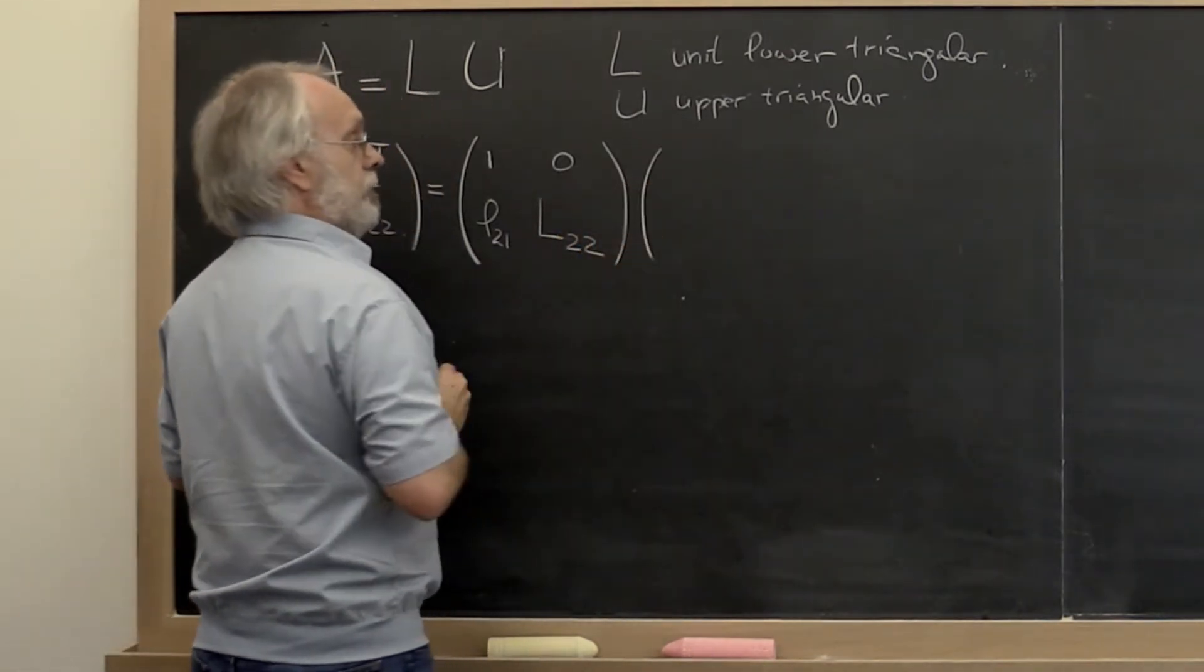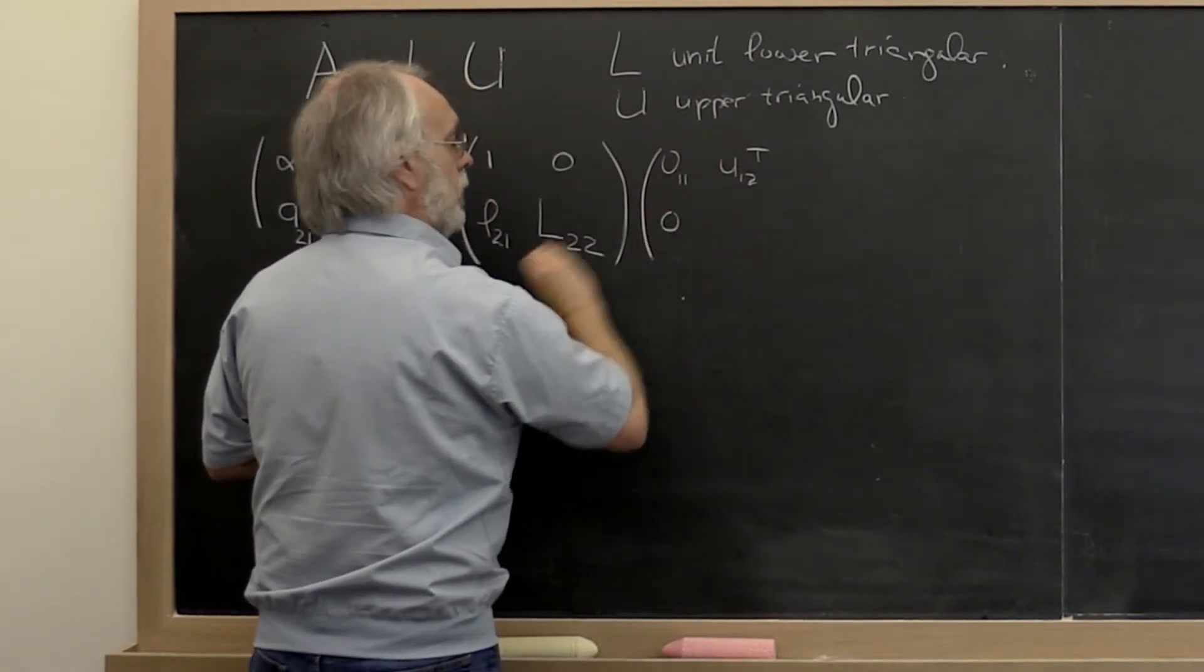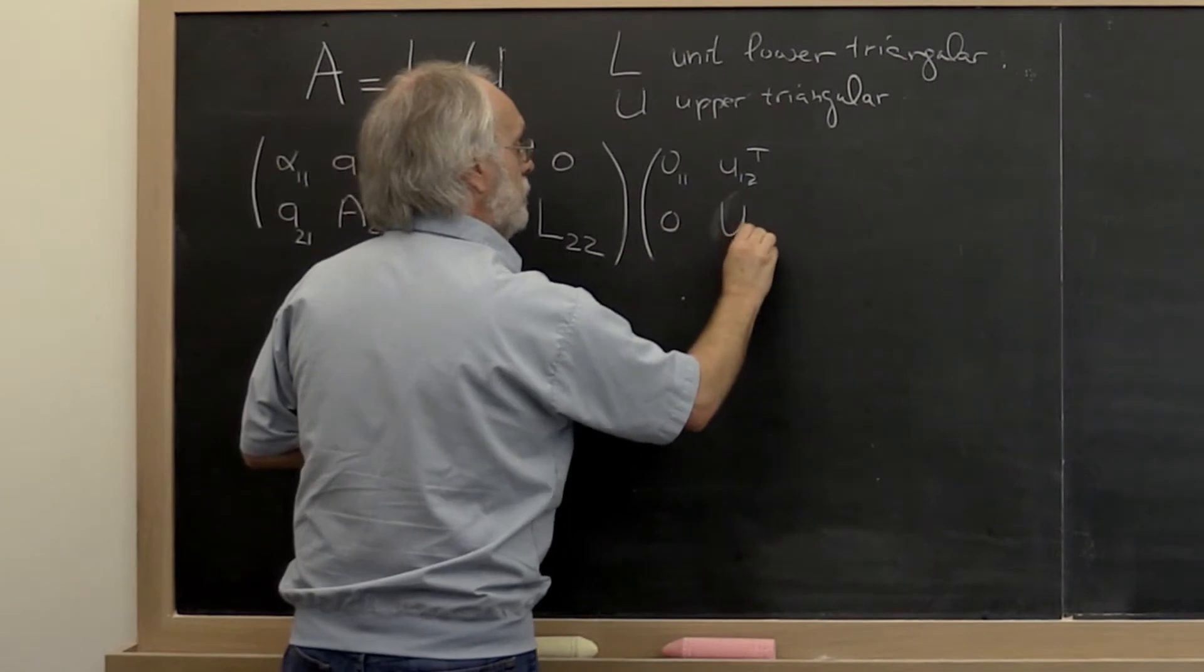And then we can do the same thing for U: upsilon 1 1, U 1 2 transpose, a column of zeros, and U 2 2.